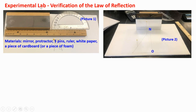Experimental lab to verify the law of reflection. The materials needed for this lab: a mirror, a protractor, three pins, a ruler, a white paper, a piece of cardboard, or a piece of foam.